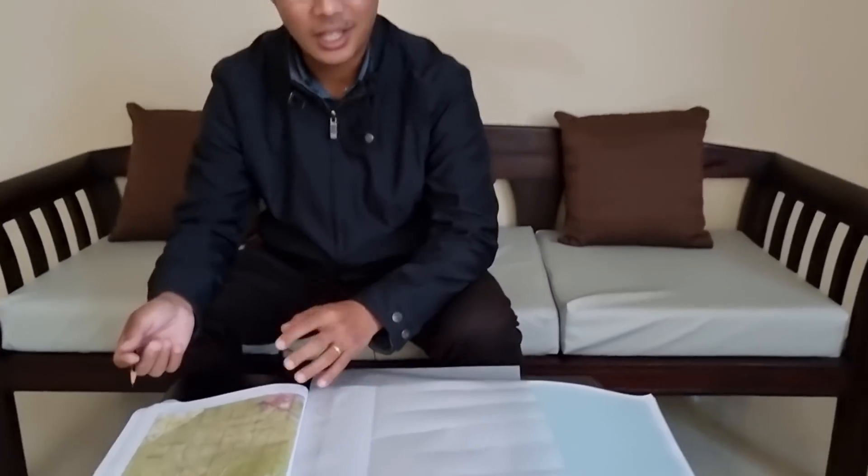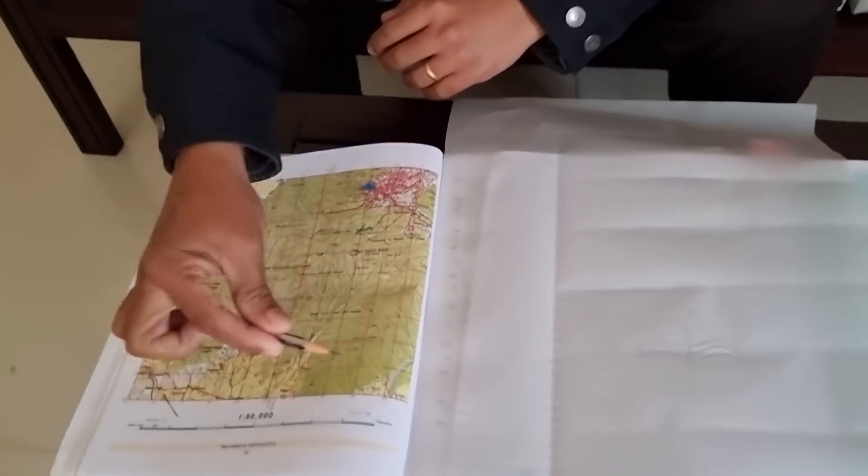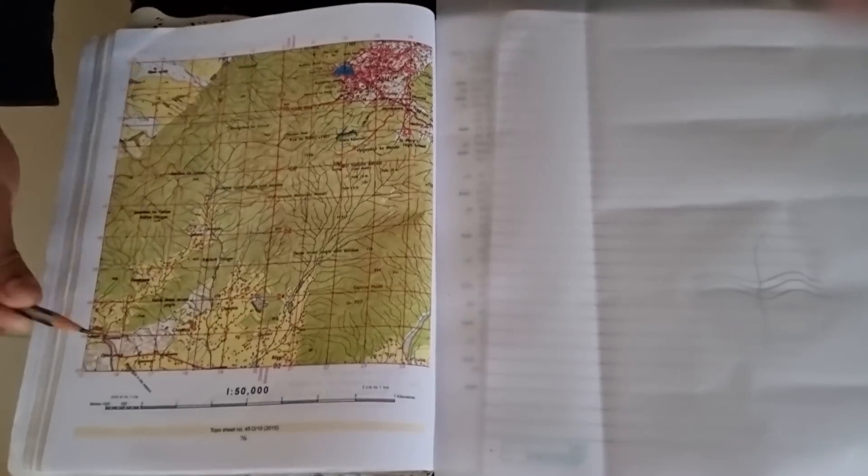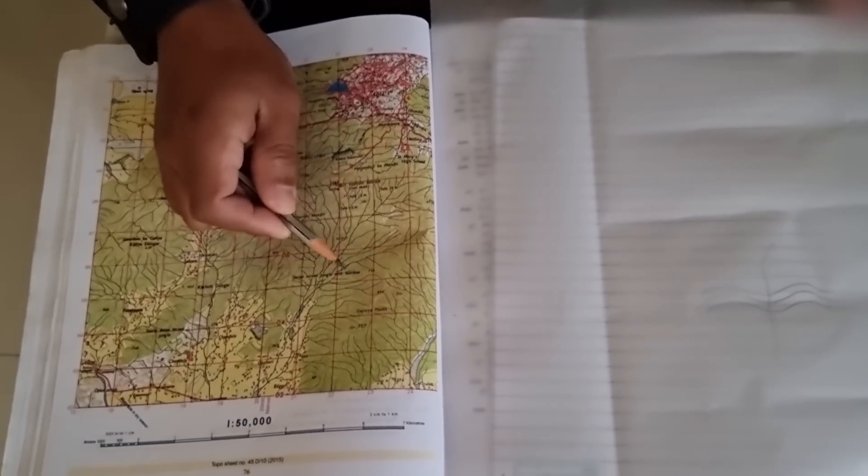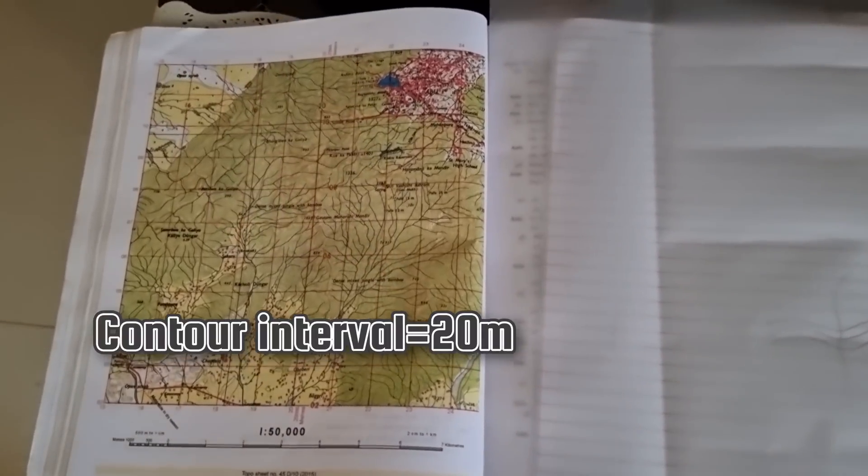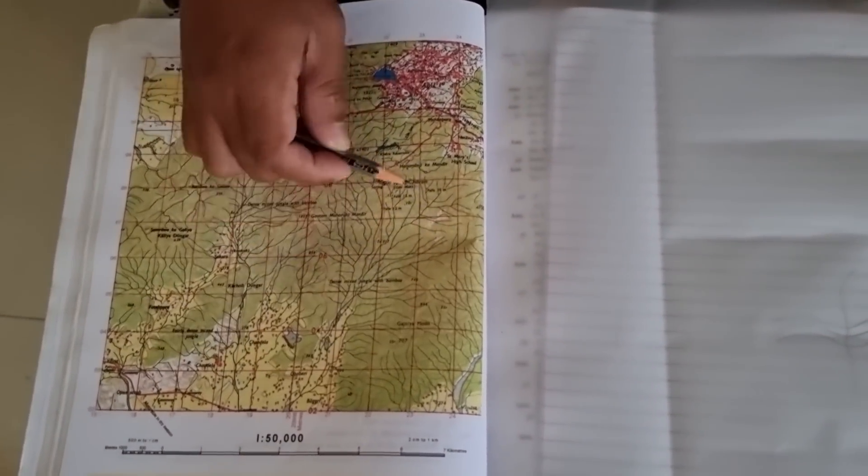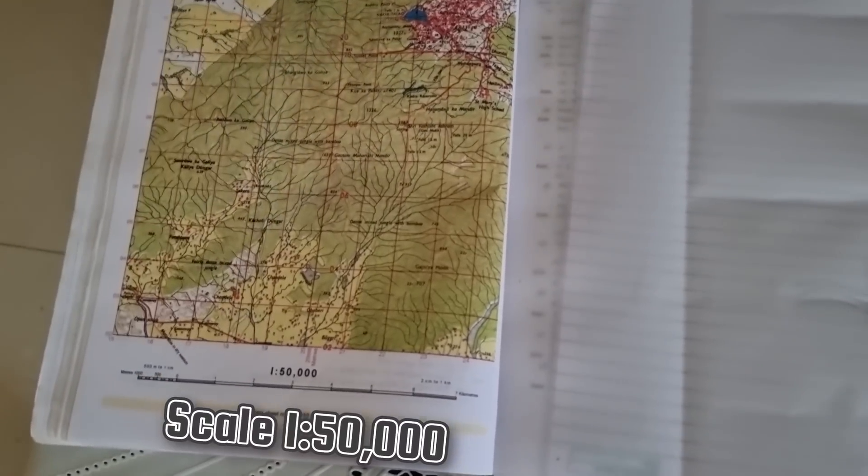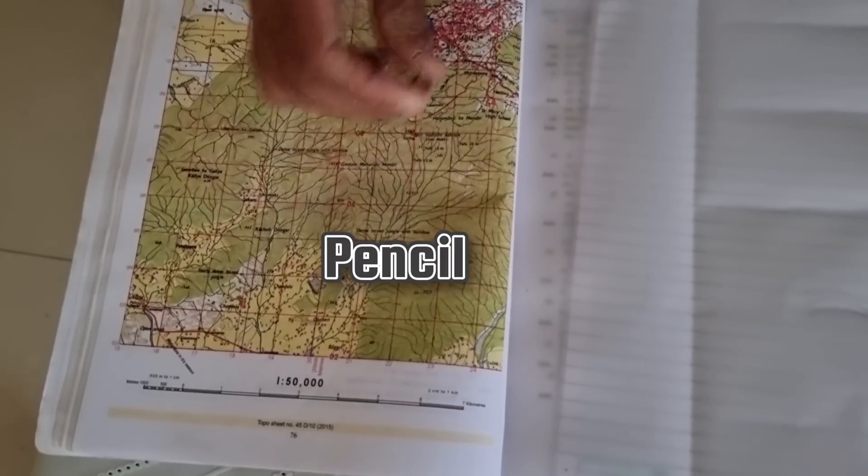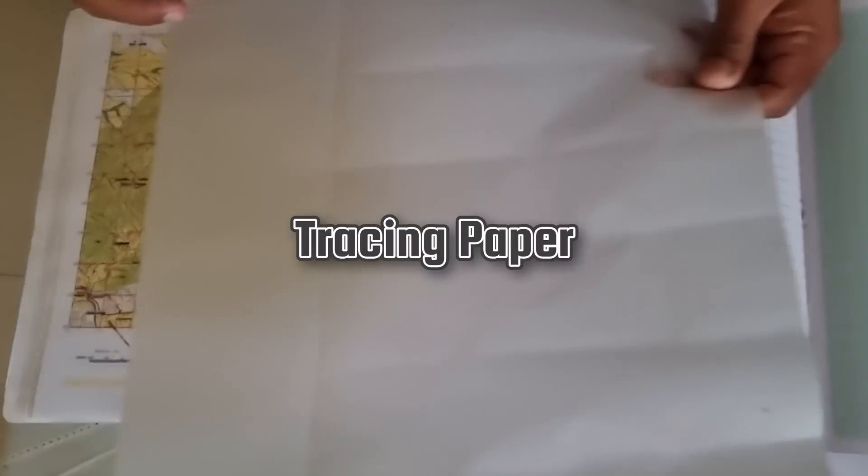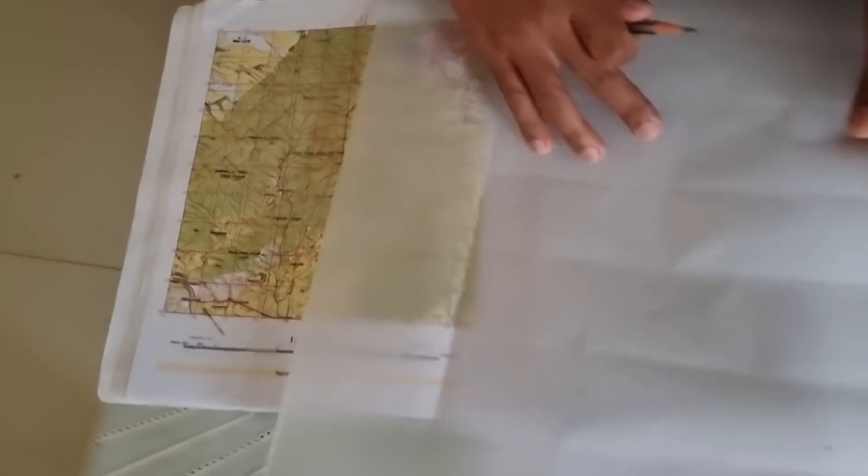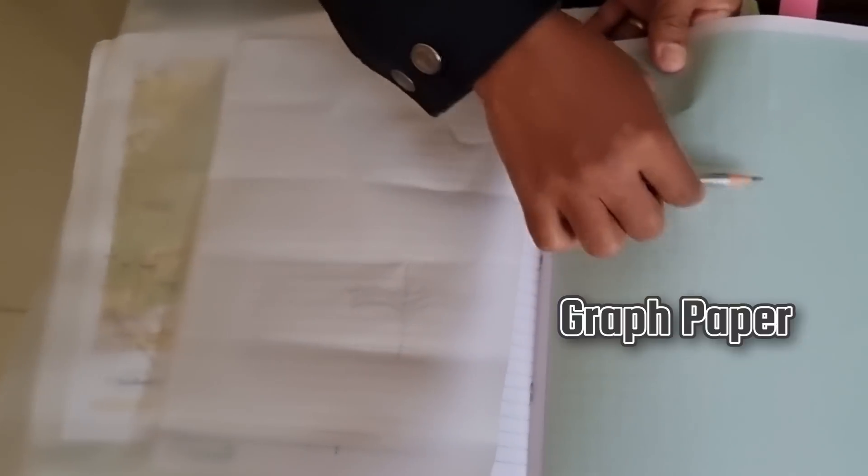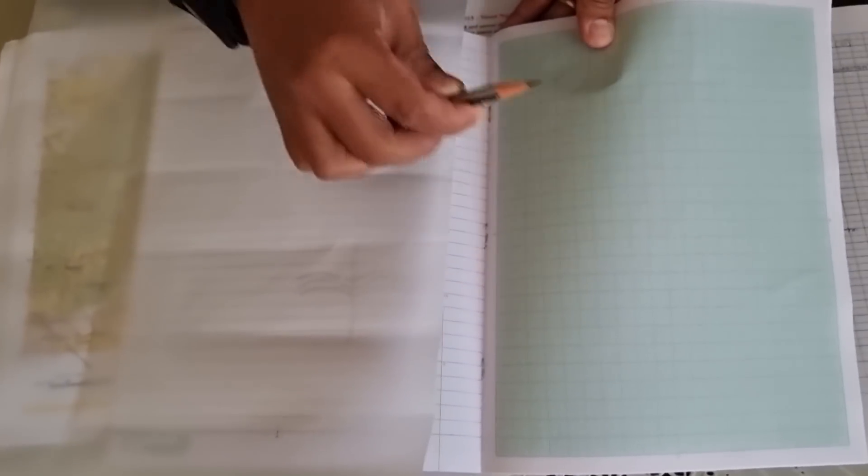Now if the camera can come up close, you can see here this is a sample toposheet. You have some contours here, this is in a spacing of 20 meters and some streams and rivers here. The scale is usually 1 is to 50,000. So all you need is a pencil, tracing paper where you place over it and then draw, and a graph paper like this to calculate the area.